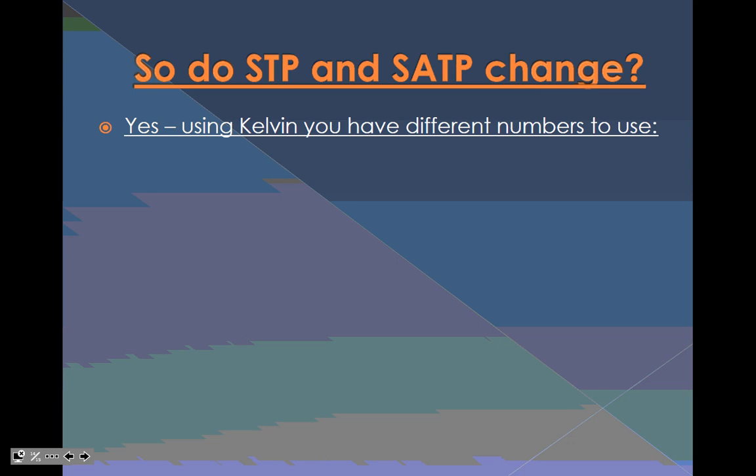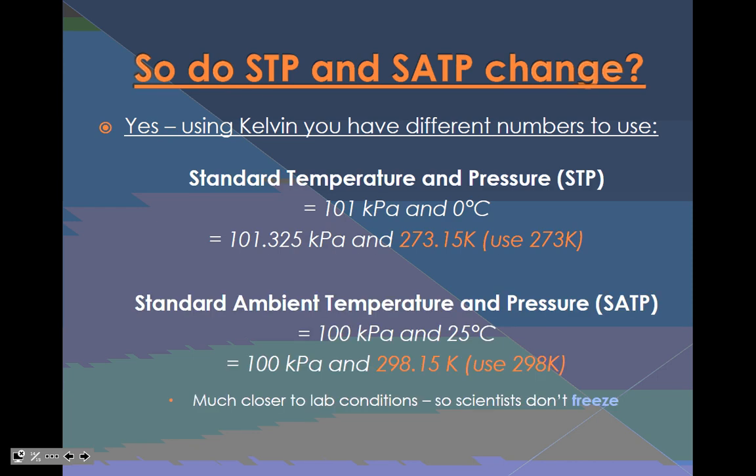So do STP and SATP change? Yes. Using Kelvin, you have different numbers to use. Standard temperature and pressure at STP, Kittles, remember, it's 101 kilopascals and zero degrees Celsius. But for more specifically, we go 101.325 kilopascals and 273.15. Okay? We are going to use the data booklet. We just decided as a science community at the school here at Mac that we're going to use 273.15. Standard ambient temperature and pressure, 298.15 Kelvin and 100 kilopascals. That's it, kiddos. So just let that sink in and we'll continue with gas laws in our next podcast. Thank you.